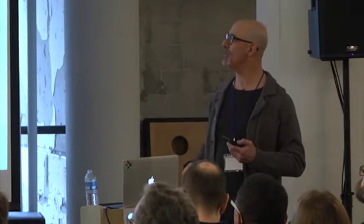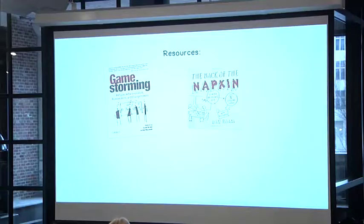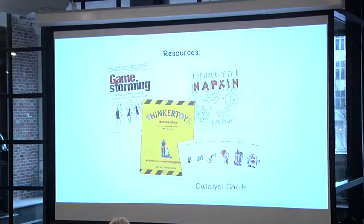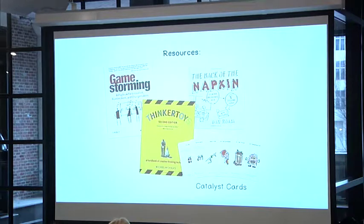Some resources for that: Game Storming — everybody heard of that book? It's a great book. The Back of the Napkin by Dan Roam is about visual thinking. Thinker Toys is another one. And a shameless self-promotion: Catalyst Cards, a card deck for visual thinking.